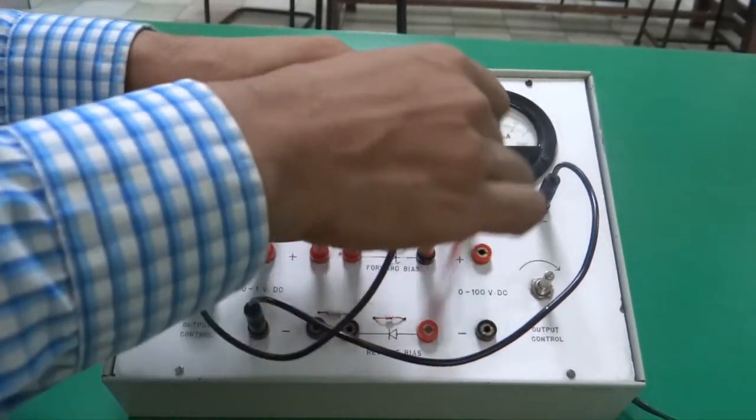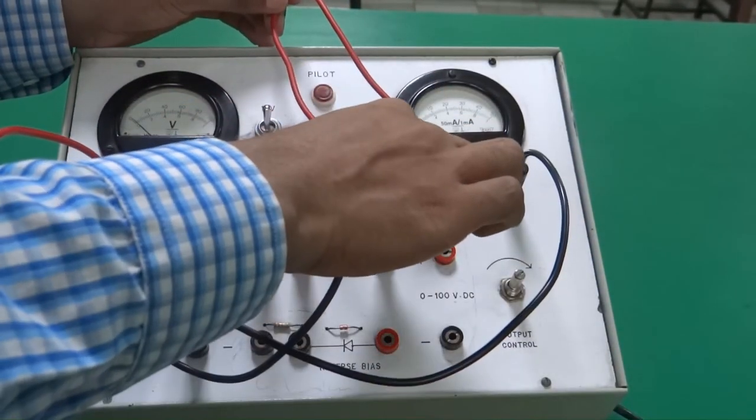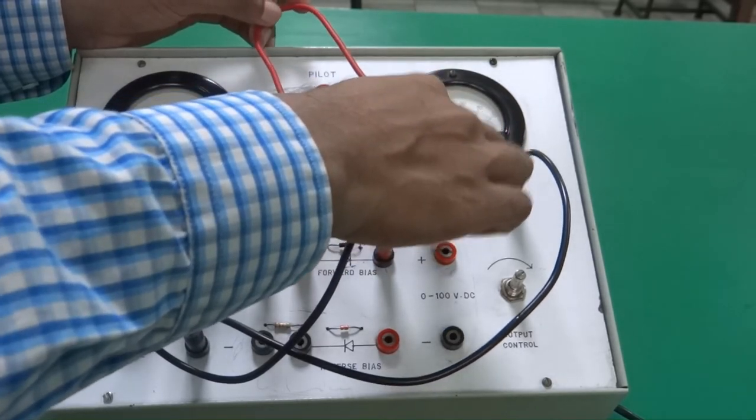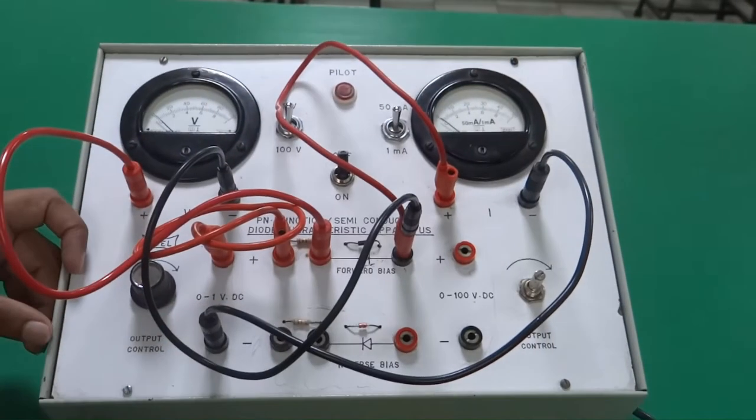Next, from here, we will connect an ammeter in series. The negative side goes to the ammeter and from here, it comes back to the power supply. Hence, our circuit is connected.